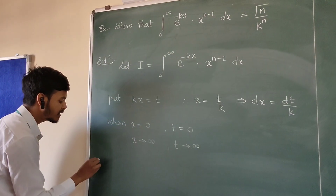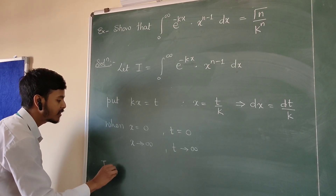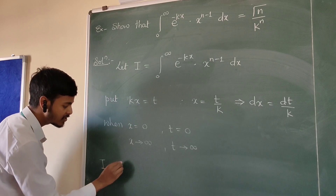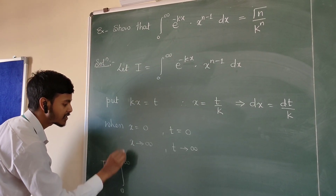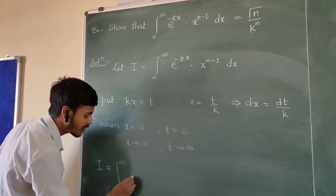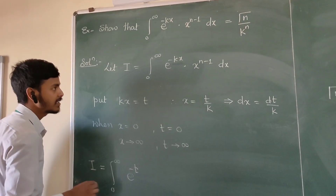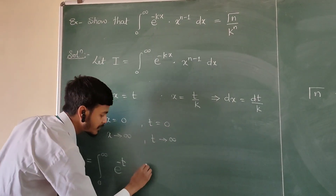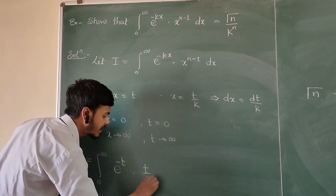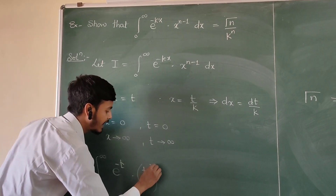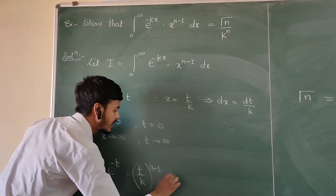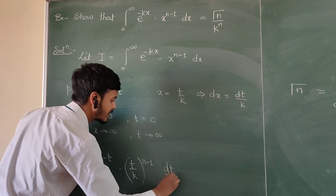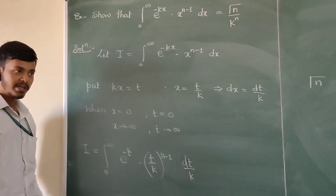Now rewrite i. i equals the integration from 0 to infinity — as you can see the limits are unchanged — of e to the power minus t into x to the power n minus 1 dx, where x is t by k. So we have t by k to the power n minus 1, and dx is dt by k.